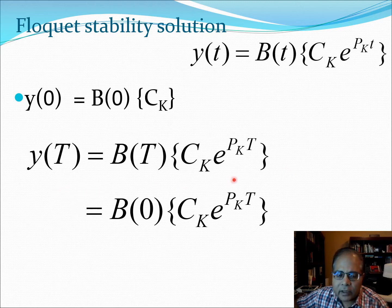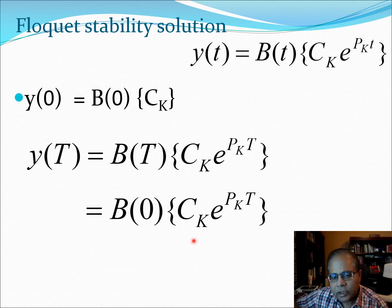Now, the second equation, that is Y(T) equation, can be also written in terms of B zero C_K e^(P_K T). Because remember that B(T) equal to B zero. So here we are bringing in the periodicity of the system.